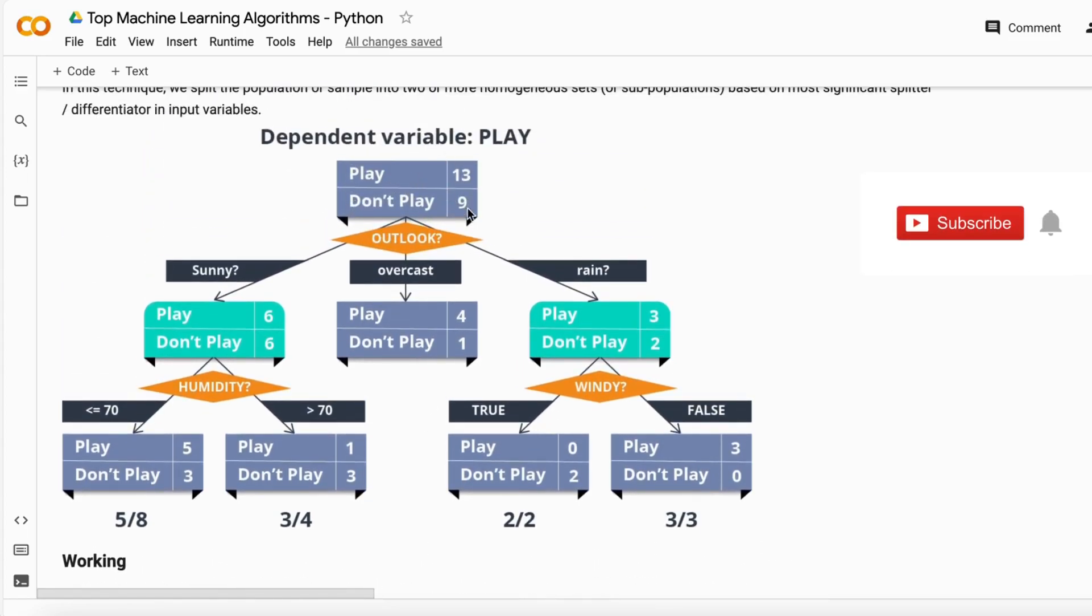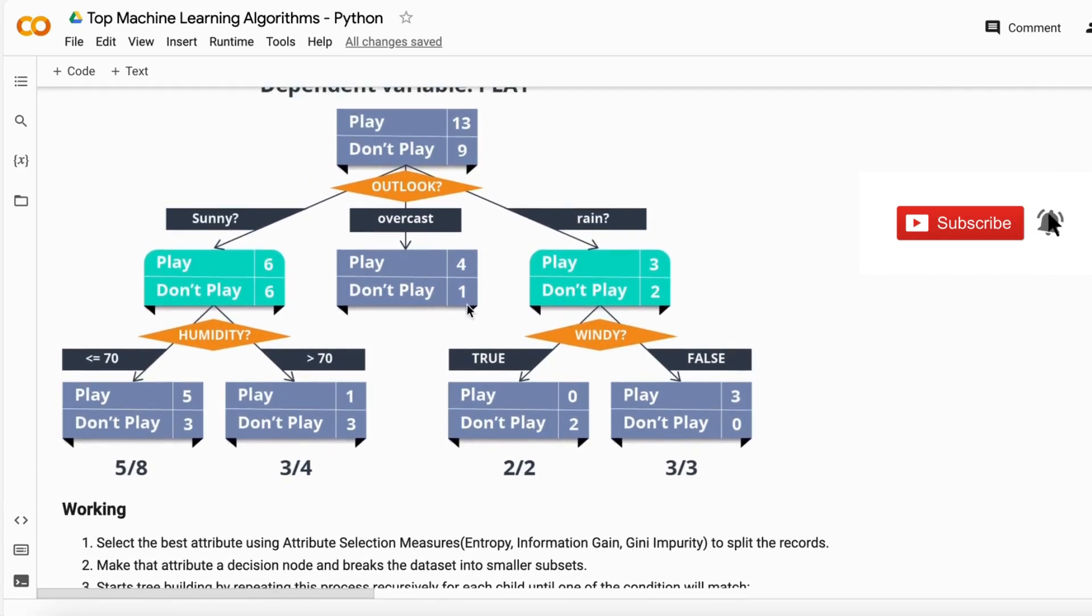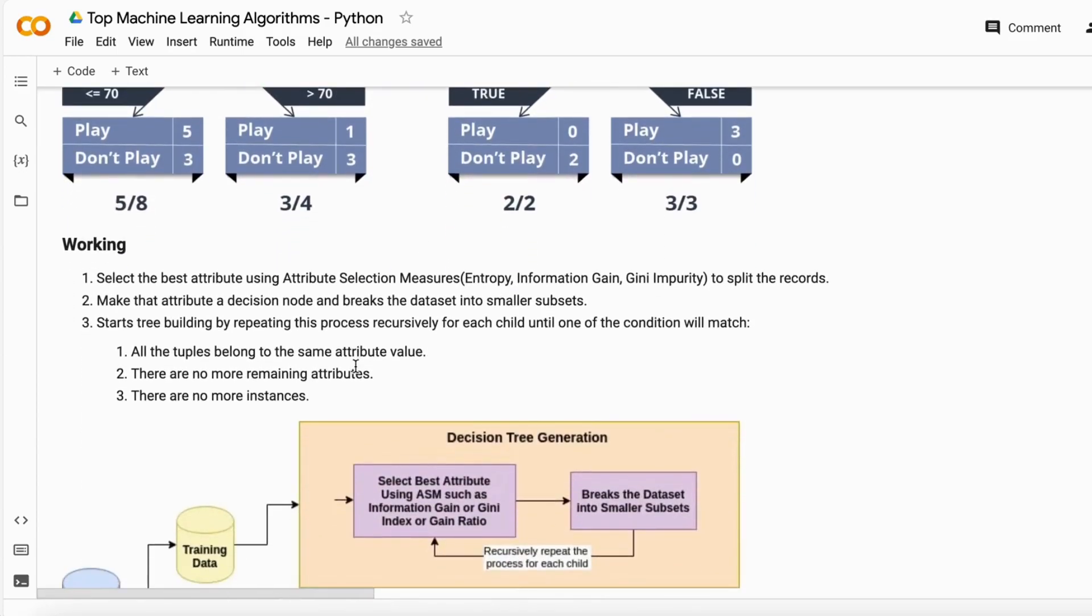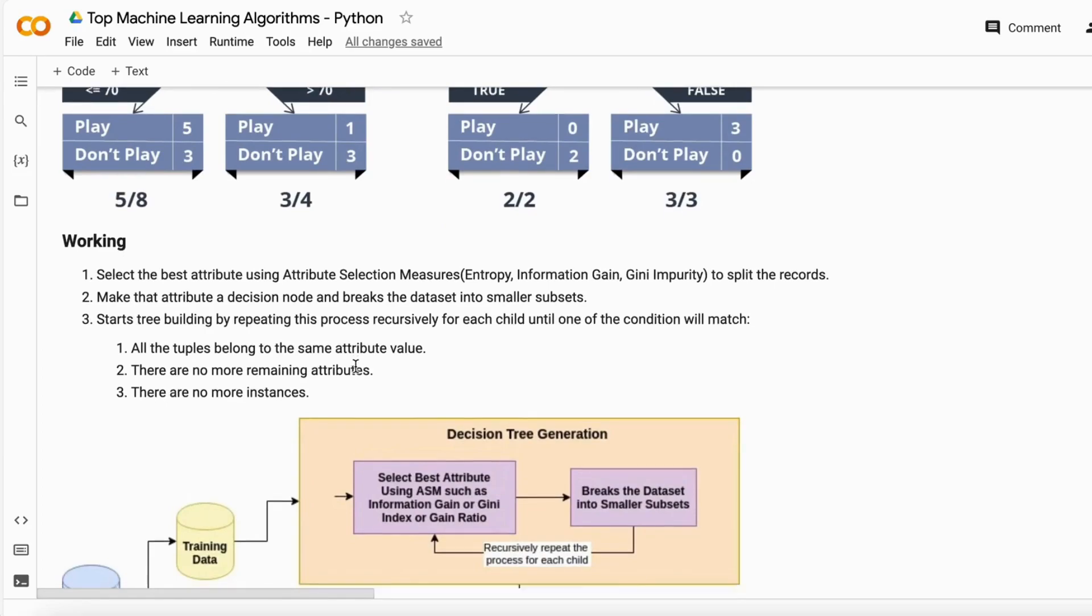So it first chooses this variable. This variable is chosen by the high information gain feature. Then it just split into its three parts. Then for this part, it again chooses which is the best and then split again. In that way, this tree will gonna split until the end or until which we mentioned that how far it's gonna go.